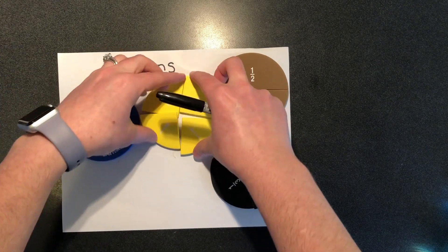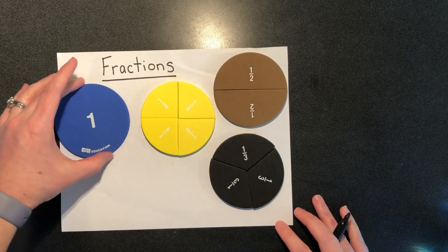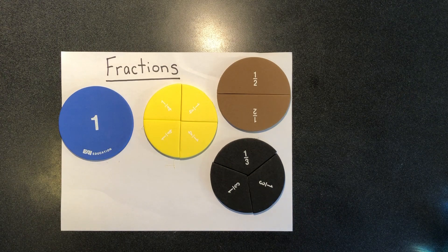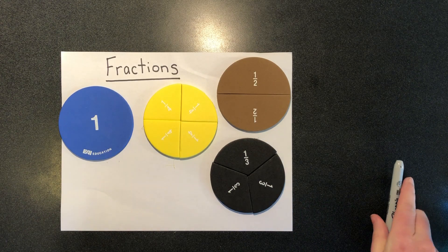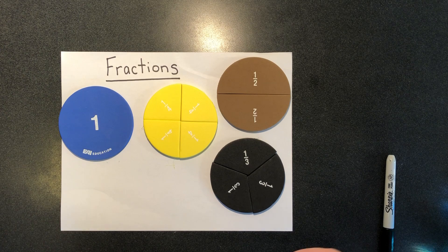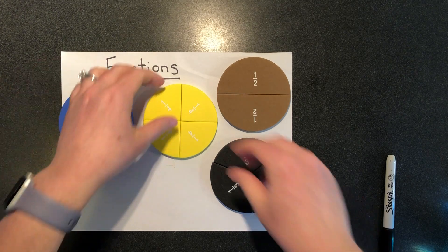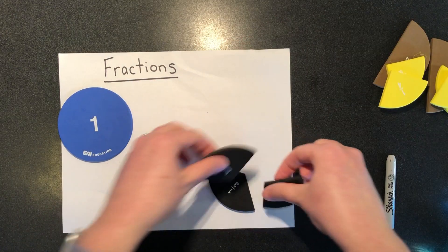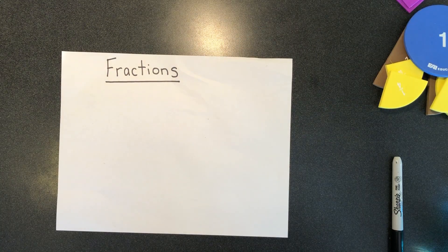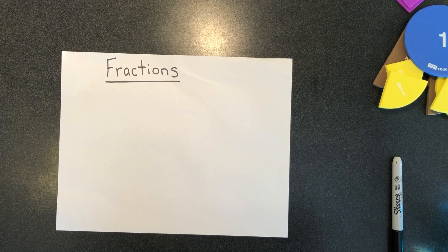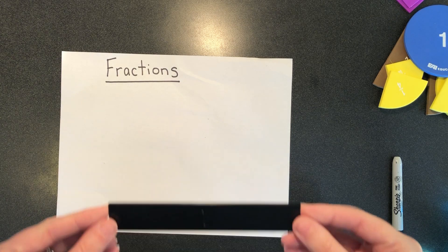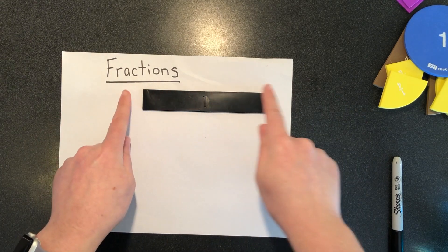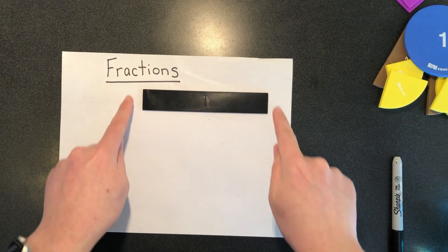So you've seen us use those circles to show fractions one way. Another way we can do it, and sometimes I think this is an easier way, especially if you're drawing the fractions, would be to look at your whole as being a rectangle instead. So another way that I could picture my fractions or draw my fractions would be to use rectangles to make a model. So if this is my whole, one whole rectangle,